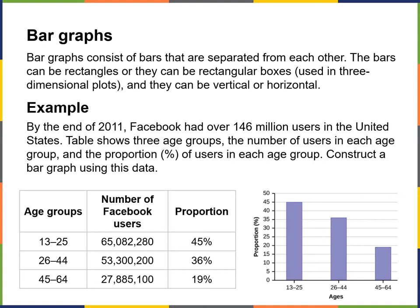You can see on the bottom right of the slide that 45% of people are aged 13 to 25, and then the older you get, the fewer users they have registered.